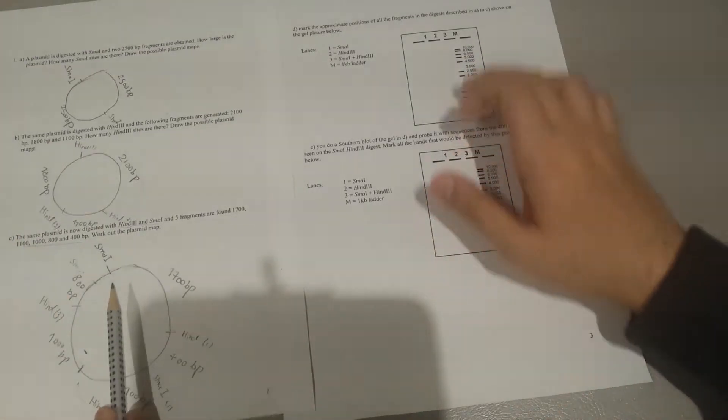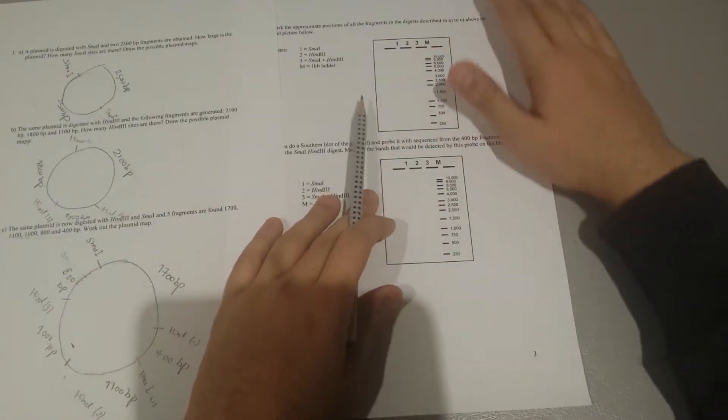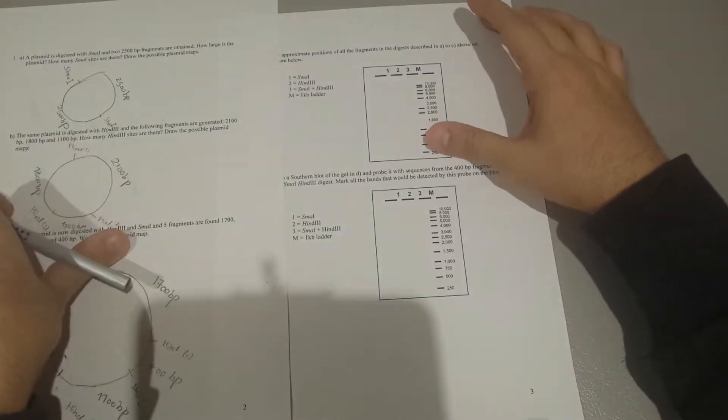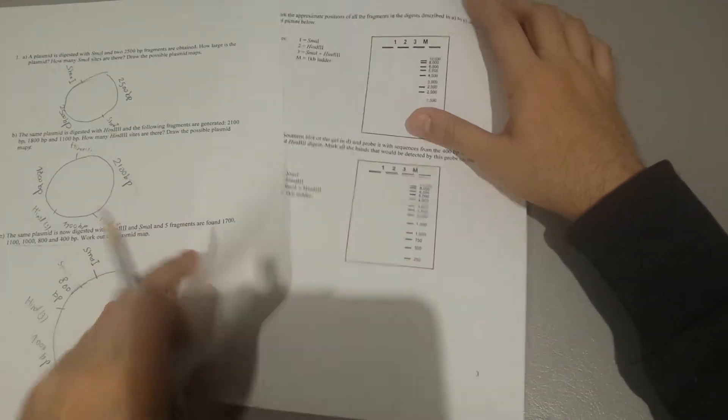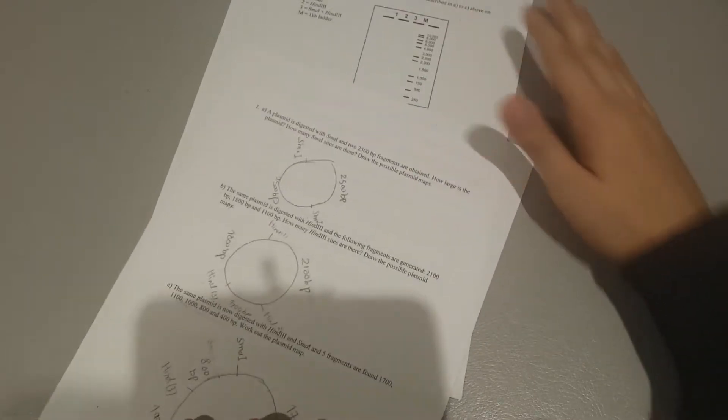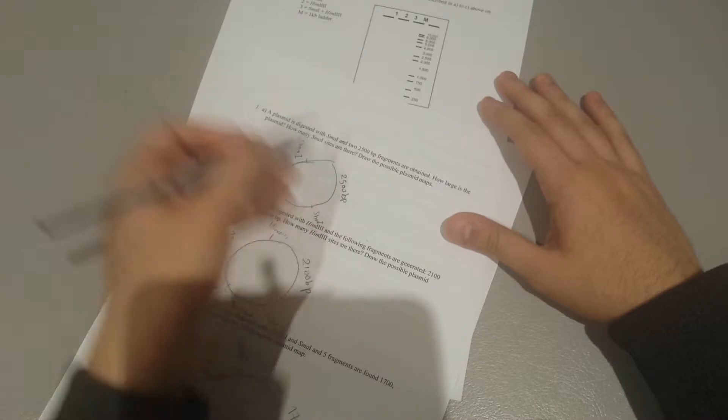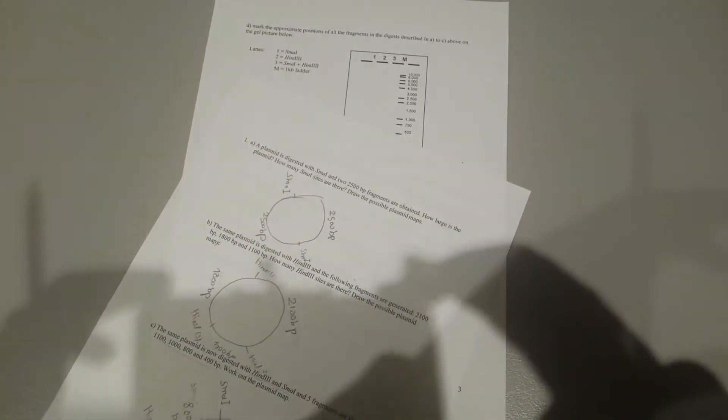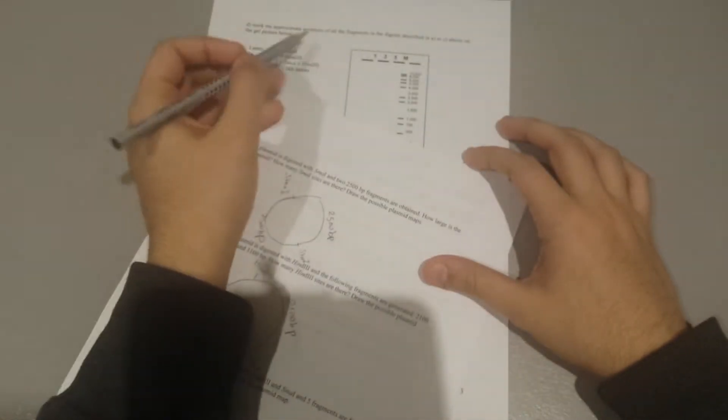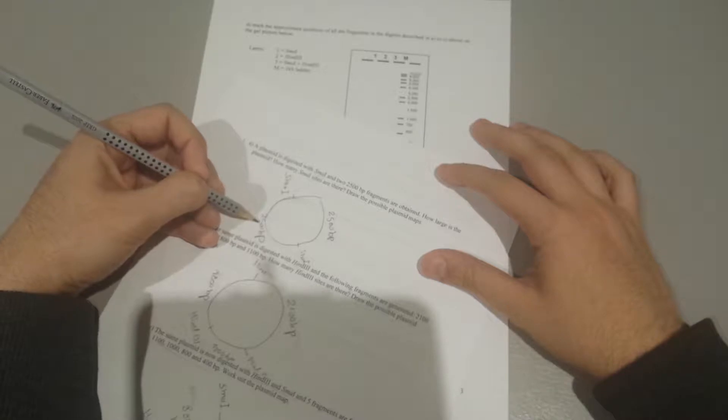So if this was your gel and this was your results, how would that look like? So this is very easy. For this one, we said two 2,500 base pairs. So we have here, we have the SME I site here, so two 2,500 fragments.